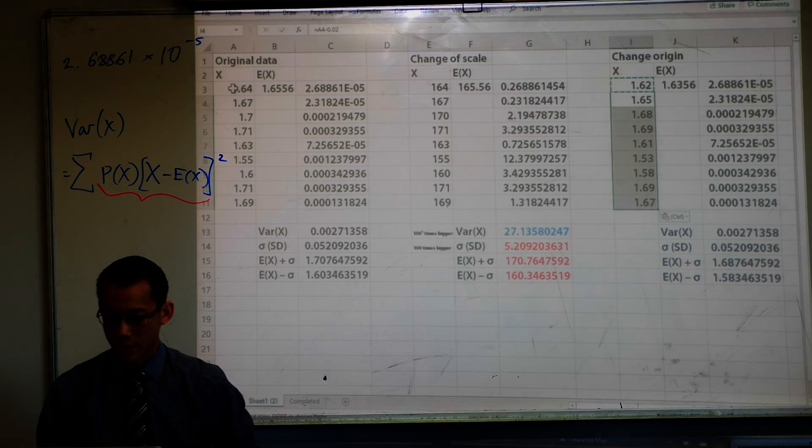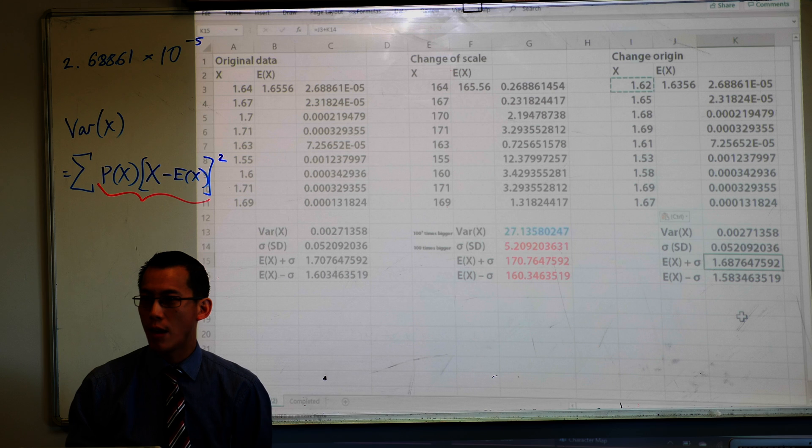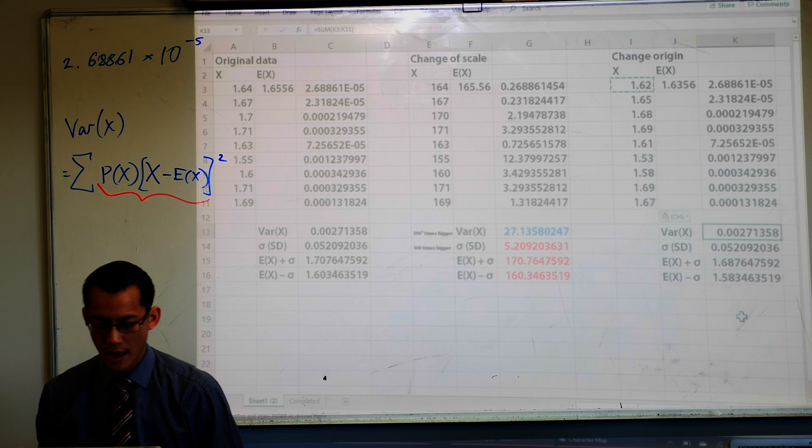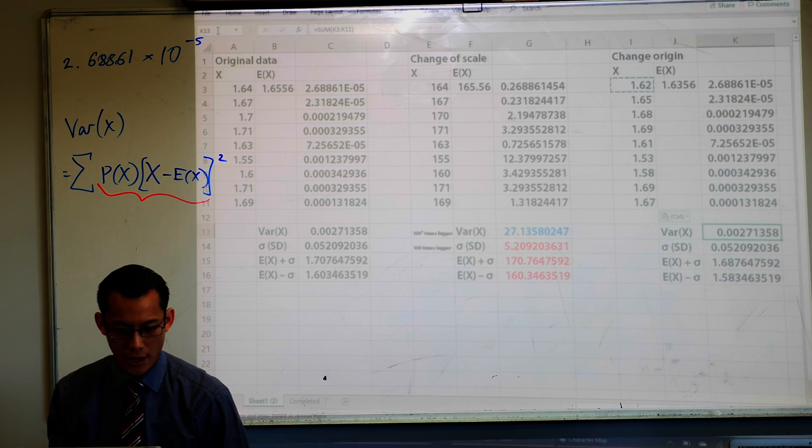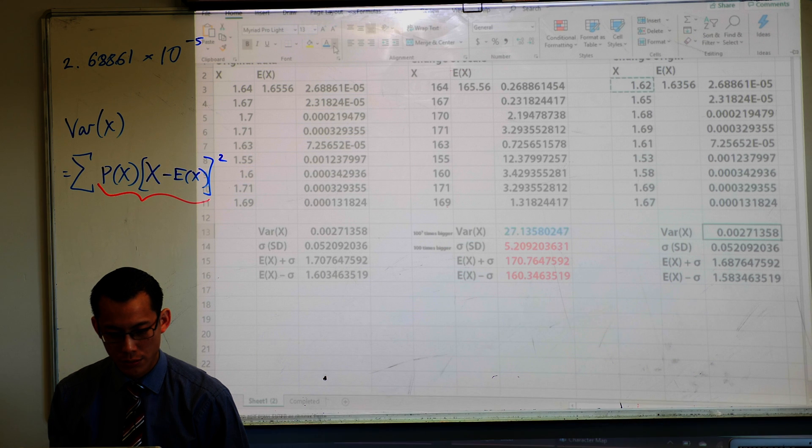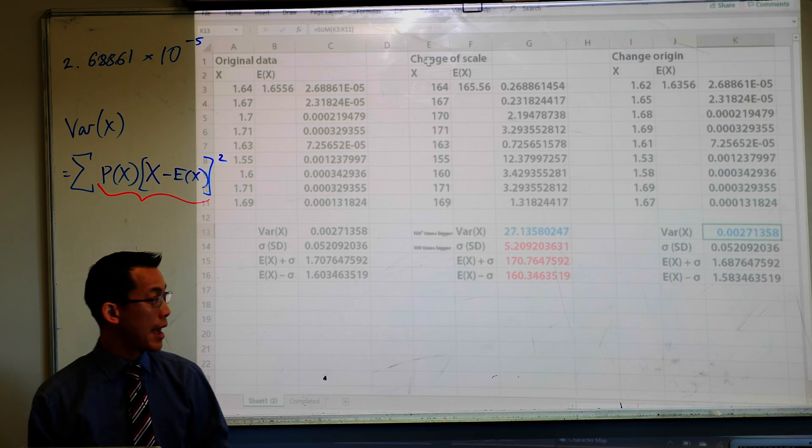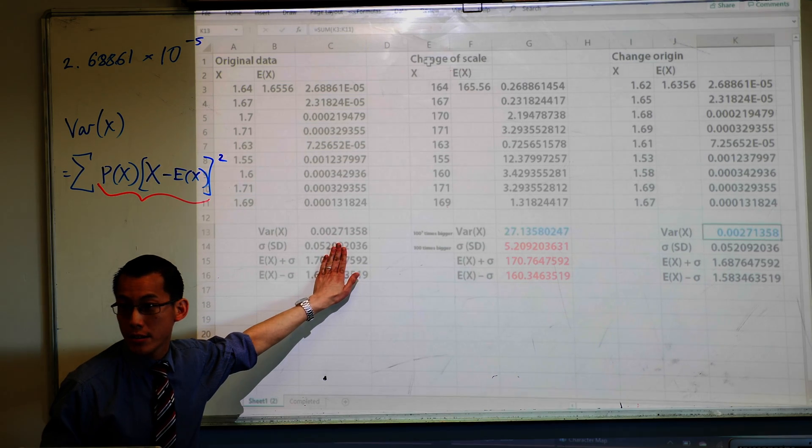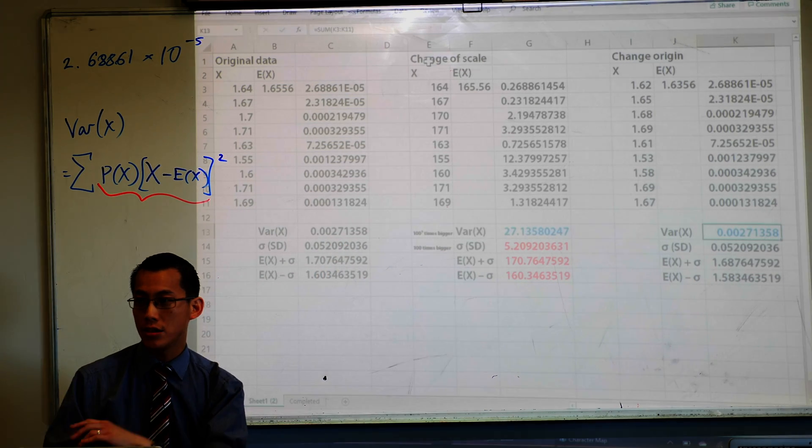Okay now this is what I want to ask, right? What differences and what similarities are there? Let's have a look at the variance first. I'm going to highlight that in blue. Can I ask you to compare original variance and variance when I've changed the origin?